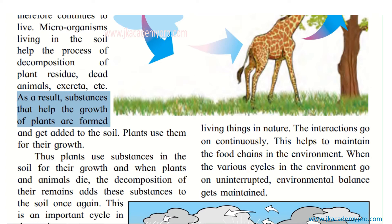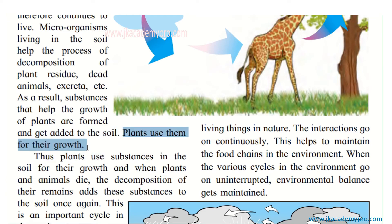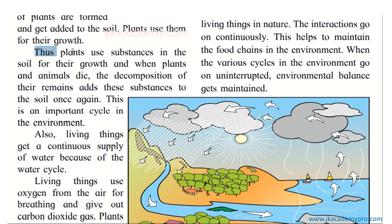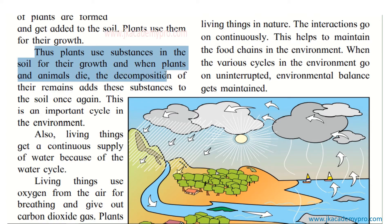This cycle keeps going on and on. Plants take nutrients, live, survive, die, and the nutrients go back. Animals that depend on plants also die and decompose, returning nutrients to the soil. Substances that help plant growth are formed and added to the soil, and plants use them for their growth. When plants and animals die, decomposition of their remains adds these substances to the soil once again.